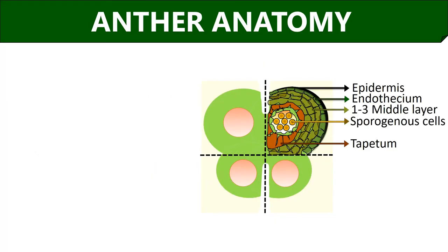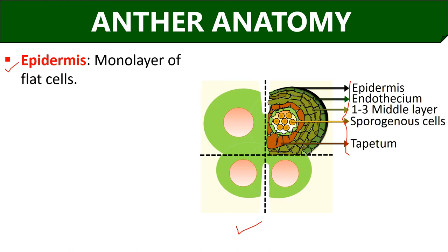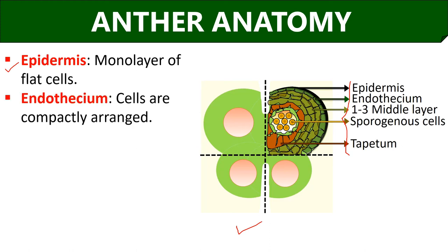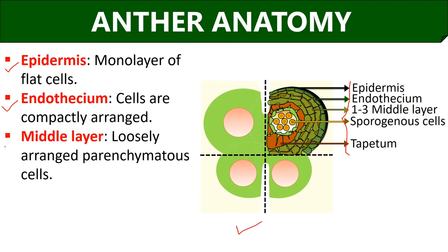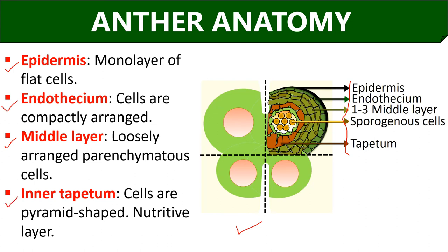Now let us discuss the anatomy of an anther. This is the transverse section of an anther, showing distinct layers of cells. The first and outermost layer is the epidermis, which exists as a monolayer of flat cells. The second layer is the endothecium, in which cells exist as a single layer with a compact arrangement. The middle or intermediate layer usually comprises one to three layers of loosely arranged parenchymatous cells. The innermost layer is the tapetum, in which cells appear pyramid-shaped; it is closest to the sporogenous cells and serves as a nutritive layer providing nourishment to the developing sporogenous cells.